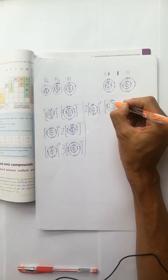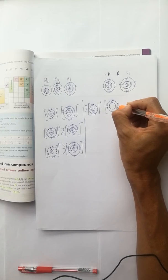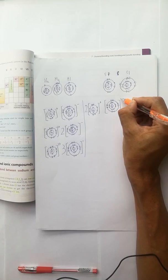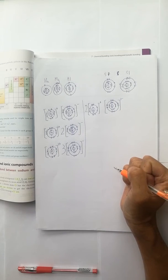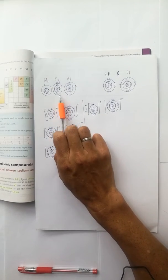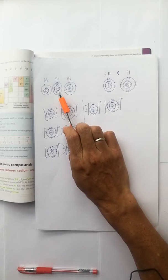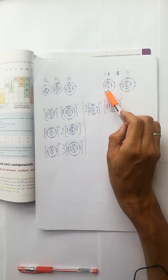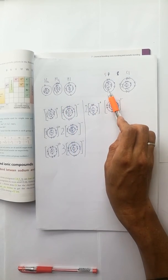The sulfur now changes to a two minus ion, S²⁻. Now continue with magnesium and sulfur, group two and group six. Magnesium loses two electrons and sulfur accepts the two electrons. One Mg and one S is needed.